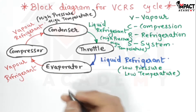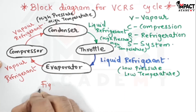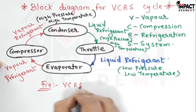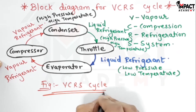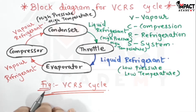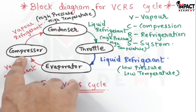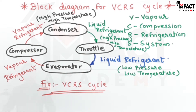So in short, that was just a block diagram explanation for a VCRS cycle. In further videos we are going to see the detailed description taking the components as a whole. Remember that the compressor is the heart of this VCRS cycle — without the compressor it cannot work.